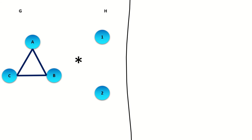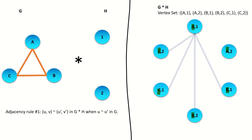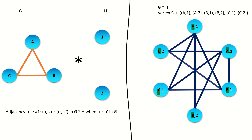As our final example, what's the conormal product of these two graphs G and H? Feel free to pause and solve it yourself. Here is our vertex set of the conormal product. Here are the adjacencies that come from the first adjacency condition — those between vertices with left entries adjacent in graph G. Since there are no adjacencies in graph H, we're done; we don't need to use the second adjacency rule.